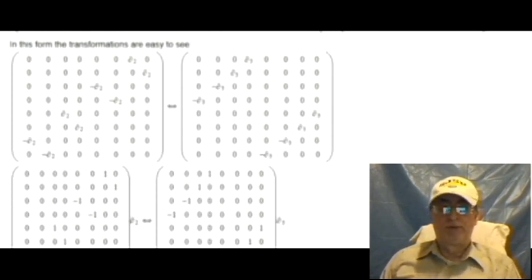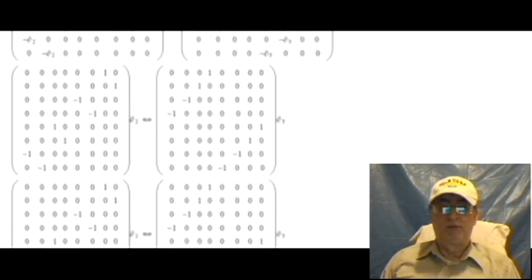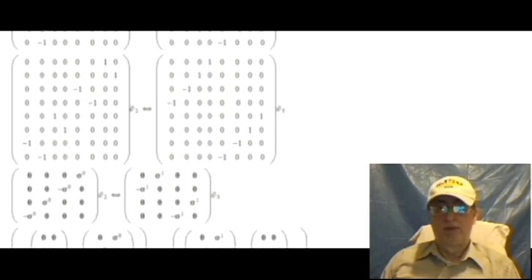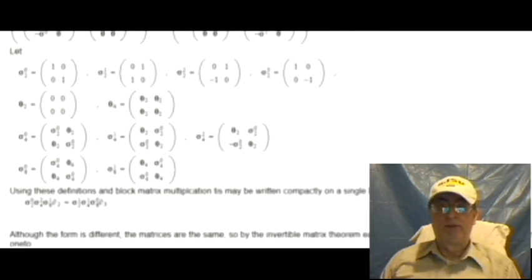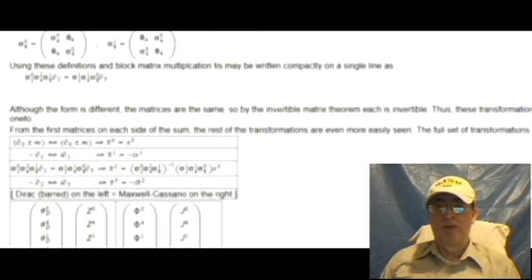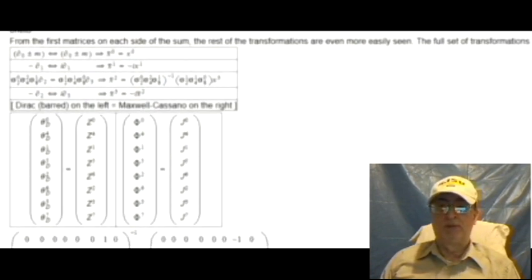By the invertible matrix theorem, each matrix is invertible. Thus, these transformations are bijective. From the first matrices on each side of the sum, the rest of the transformations are even more easily seen. The full set of transformations are shown here.